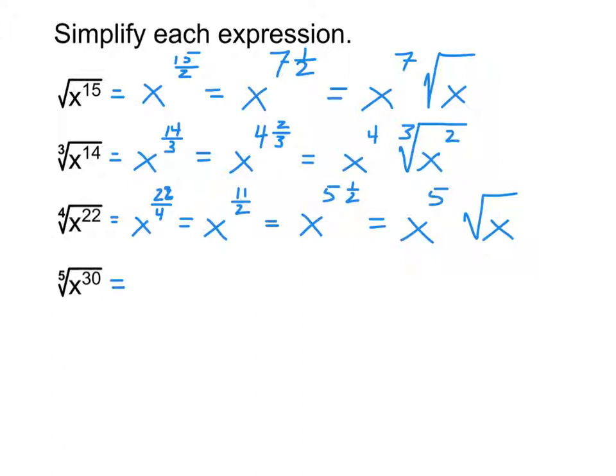And finally, for this last one, same start. Write it in exponential form. So, that's going to be x to the thirty over five. Then, thirty over five, that reduces. So, reduce it. But in this case, it happens to reduce to six. And we've seen that before. That's like what we saw last week, what we saw at the start of class today. It gives us just a whole number. If that's the case, you're done. x to the sixth is our final answer there.